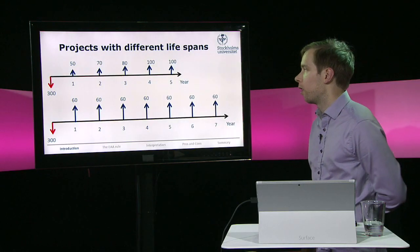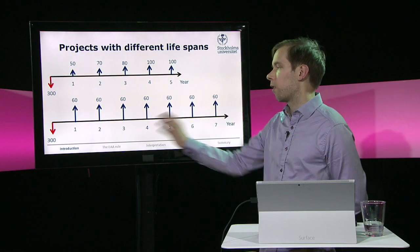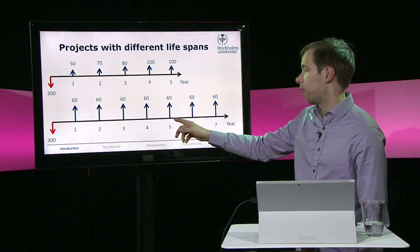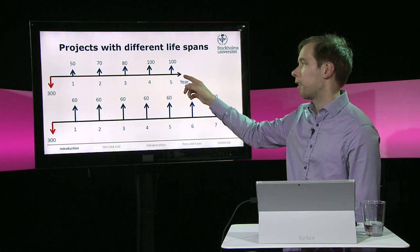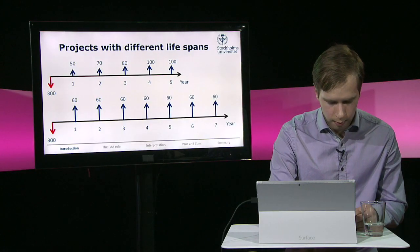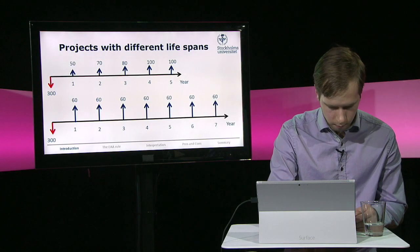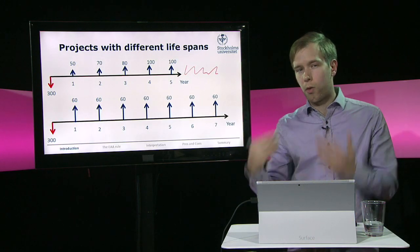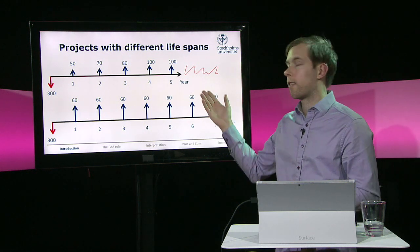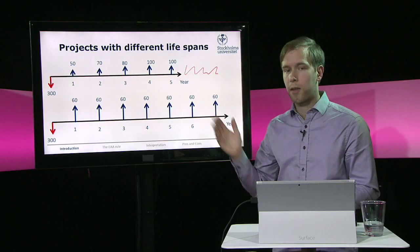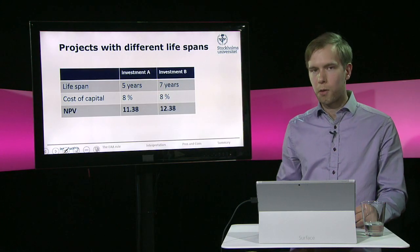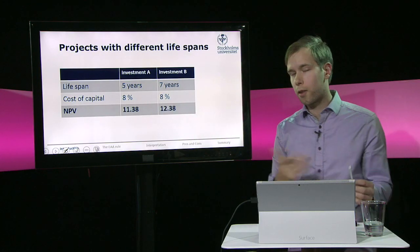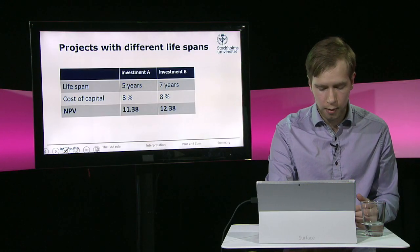But what happens if it looks different? Now it might still be so that B has a higher NPV, but after year five, investment B still goes on and investment A doesn't. The question then becomes: what are we going to do in this later period? Because once we've received all the money from A, maybe we can reinvest it at something else with a positive NPV. B has a slightly higher NPV, but since they have different lifespans, it's not so easy to distinguish which one is actually better just by looking at NPV.